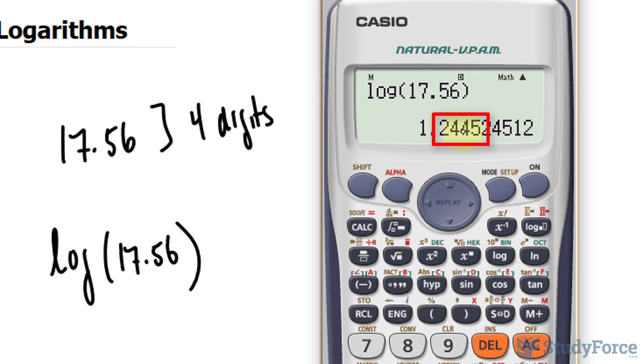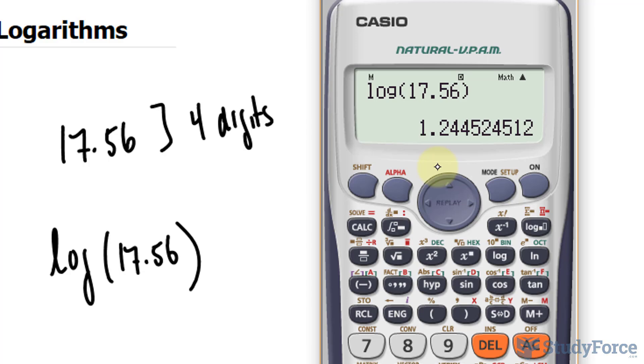So 1.2445, that is the last significant figure. Everything after that is insignificant. And since we're also rounding, the number 2, given that it's less than 5, means that we won't round this number up or down. We'll just leave it as 1.2445.